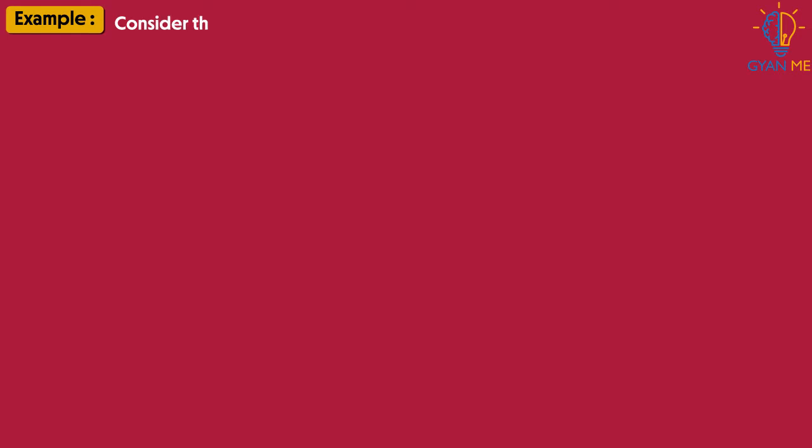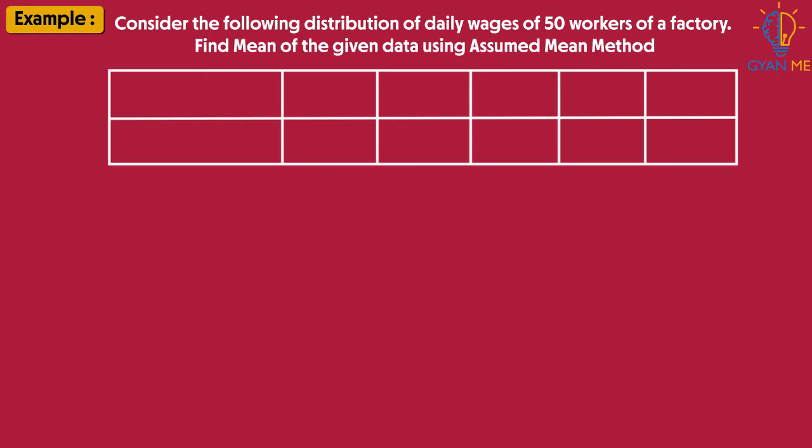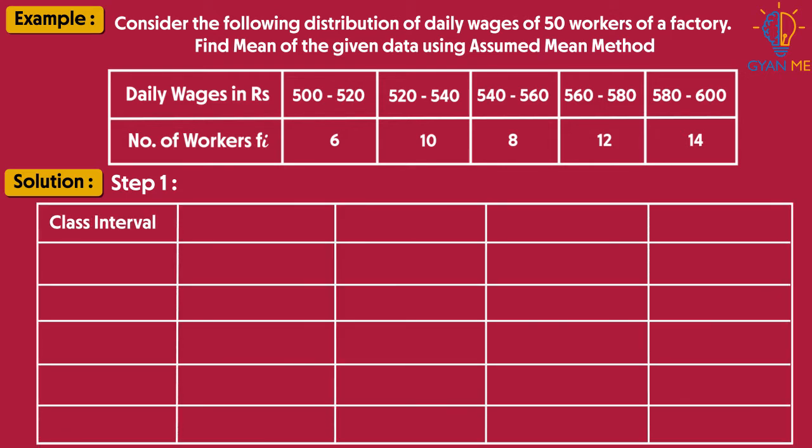For that, consider the following distribution of daily wages of 50 workers of a factory. Find the mean of the given data using assumed mean method. To find mean using assumed mean method, first we will have to make a table with class intervals and its corresponding frequencies fi as shown.